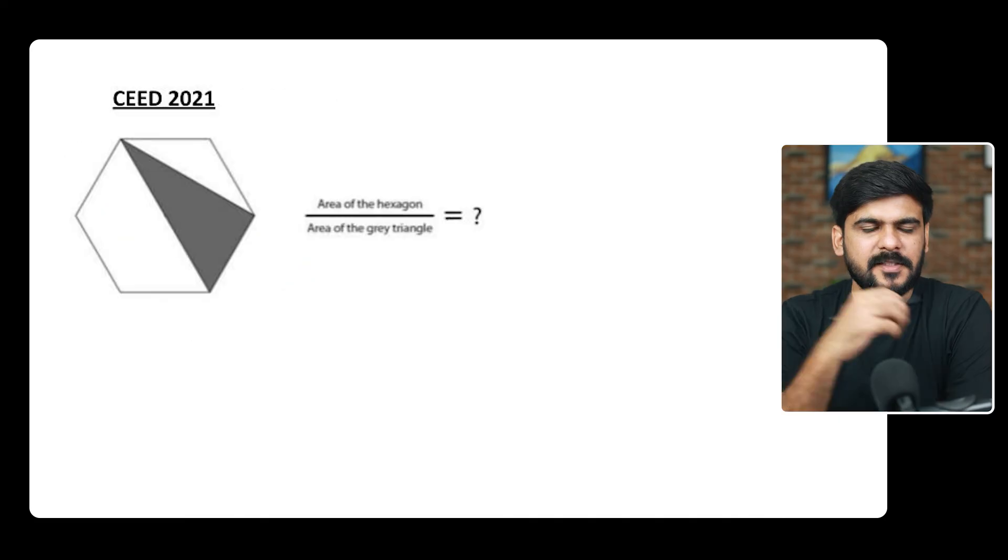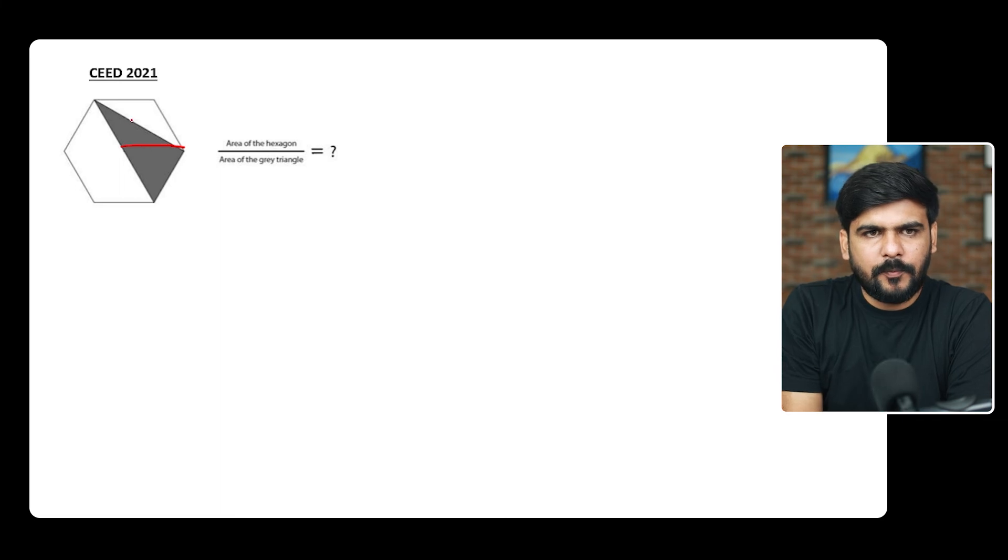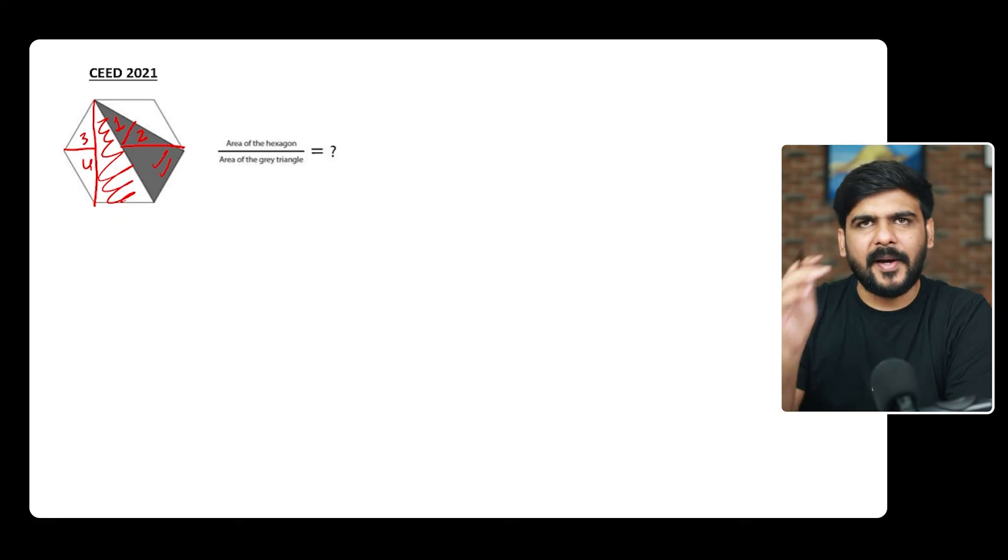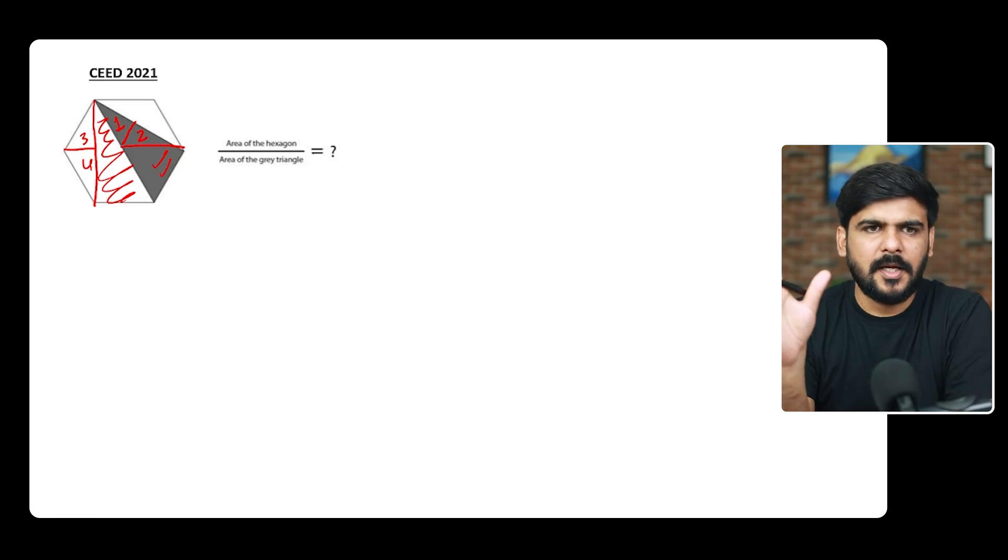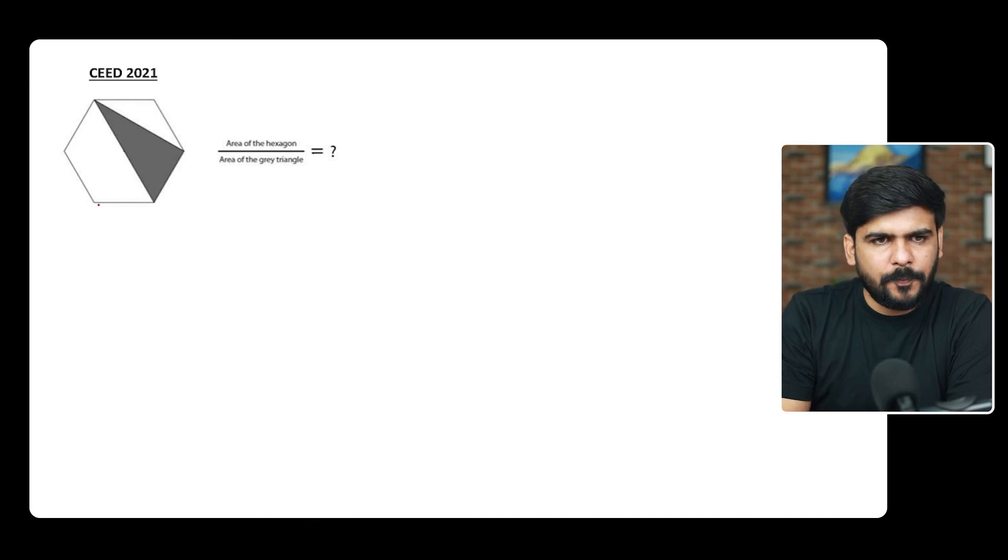Let us move to the next question. This was the question in CEED 2021, and there are various methods to do this question. You will see some people doing it like they put a line like this and then try to break it further. This would be 1, this would be 2, and similarly they break it like this, and this whole thing equals this whole shaded portion. That way also this question can be solved, which you can find in many videos. But let us try to visually see what is the best method we can use. If I try to put a line here and then try to put it like this, will it not become a cube? Look at this now.